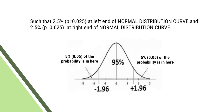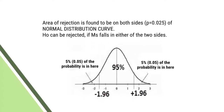Such that 2.5% — probability 0.025 — lies at the left side of the normal distribution curve, and 2.5% — probability 0.025 — lies at the right end of the normal distribution curve. That means 2.5% of the total will be on the left side and 2.5% on the right side. The area of rejection is found to be on both sides with probability 0.025. The null hypothesis can be rejected if the sample mean falls in either of the two rejection regions.